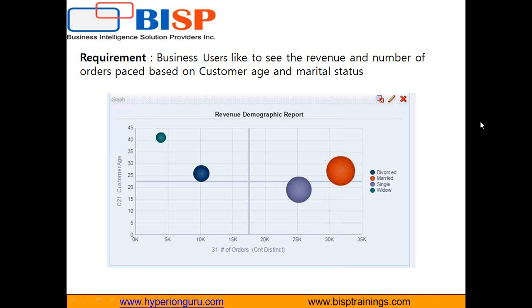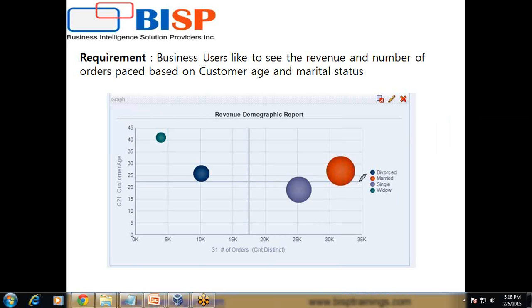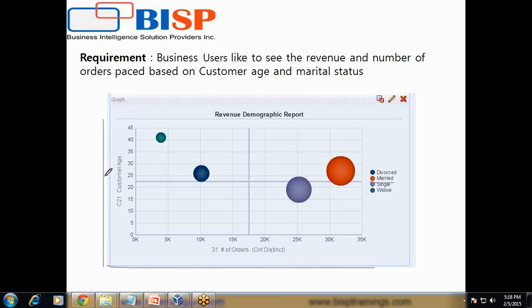As you see in this example, the biggest revenue contribution is done by married people in the age group between 25 to 30. The size of the bubble represents the revenue contribution, with the X and Y axes showing customer age and number of order placements. Married people contribute the highest in terms of both revenue and number of orders placed.